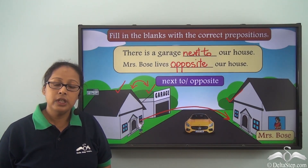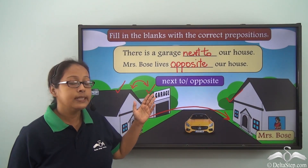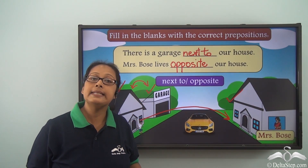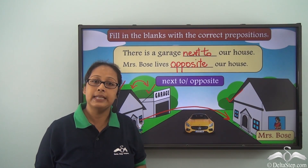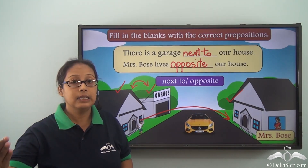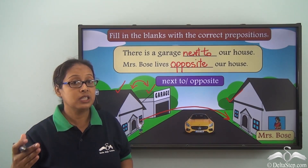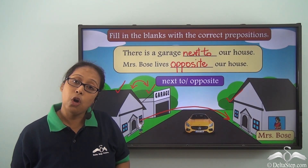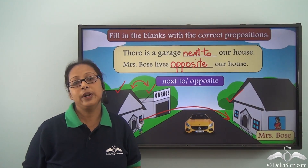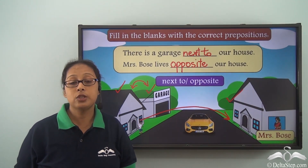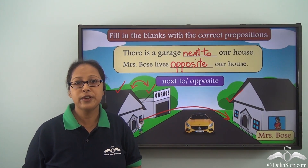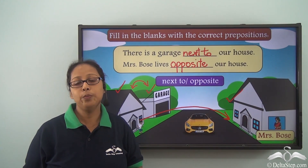Today we have learnt two new prepositions: opposite and next to. When we use next to, we mean something beside us or side by side. When we are talking about something being on the other side or facing us in the reverse direction, then we use the preposition opposite. There are more prepositions which we will learn very soon. You can use next to and opposite in sentences of your own and see how many you can make.